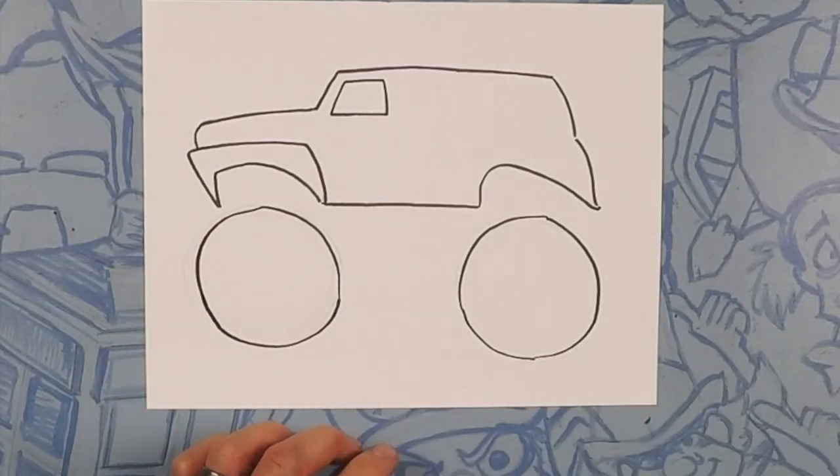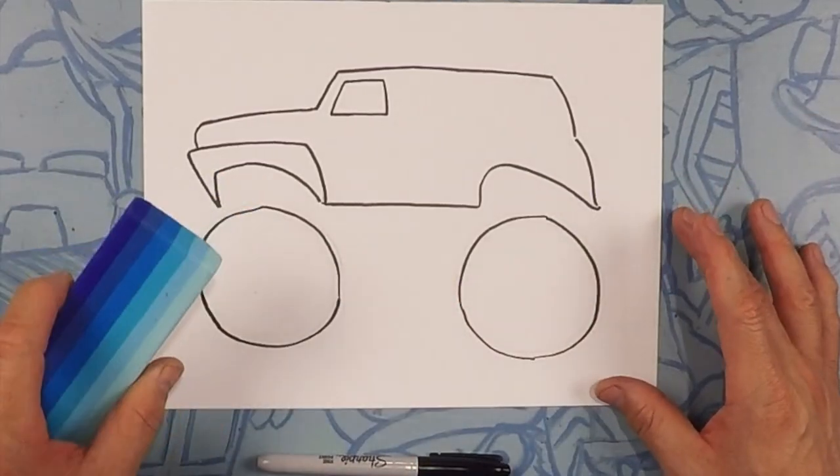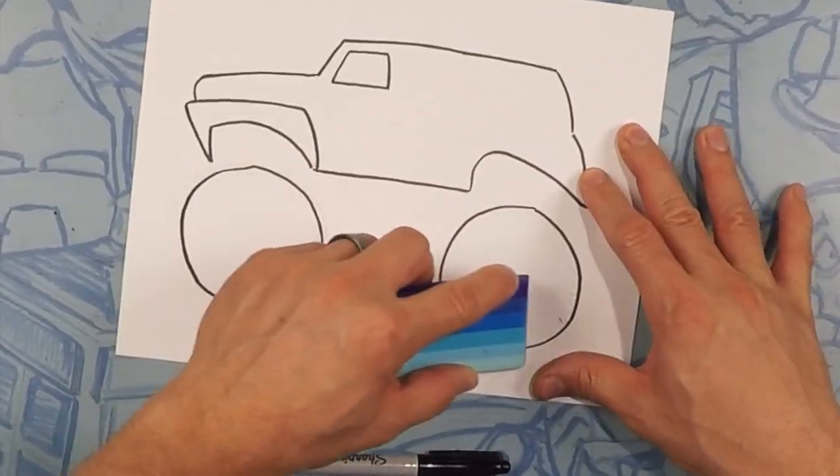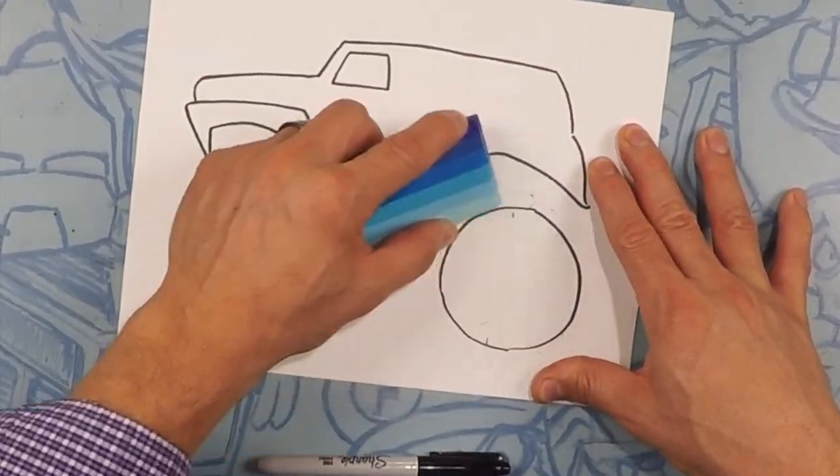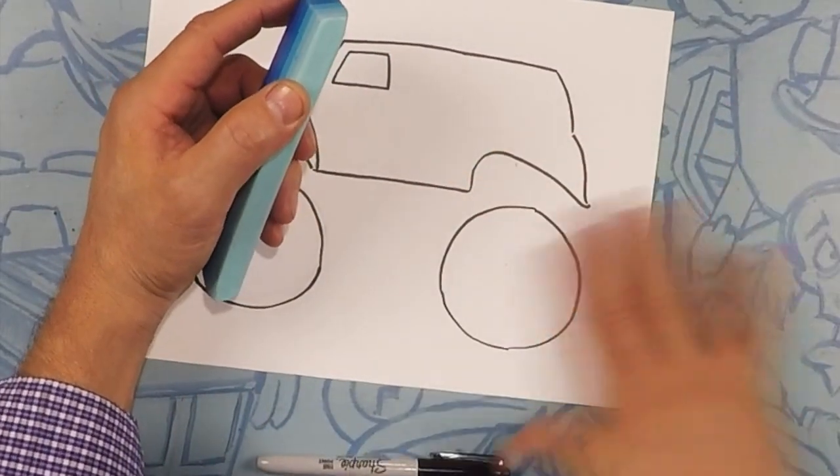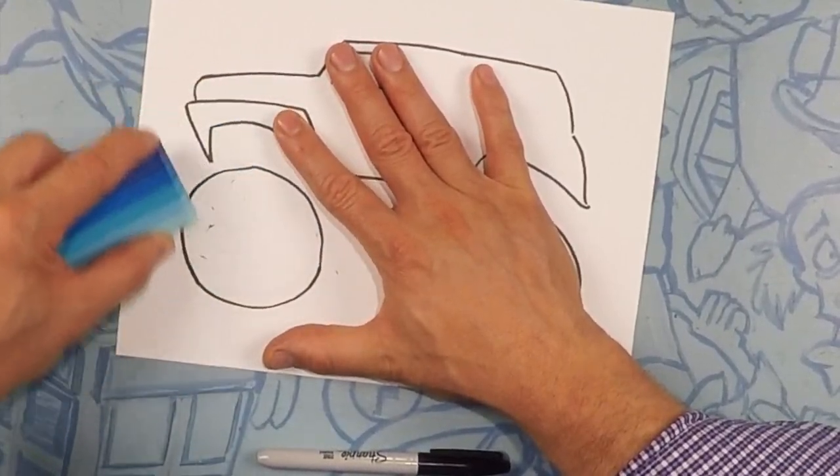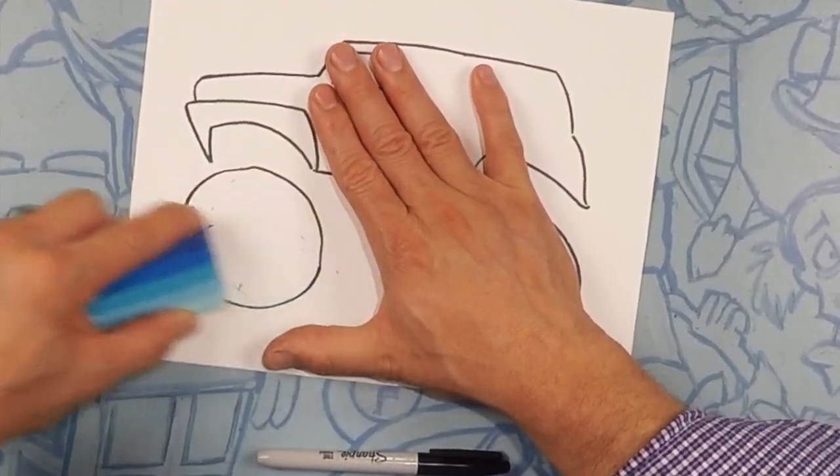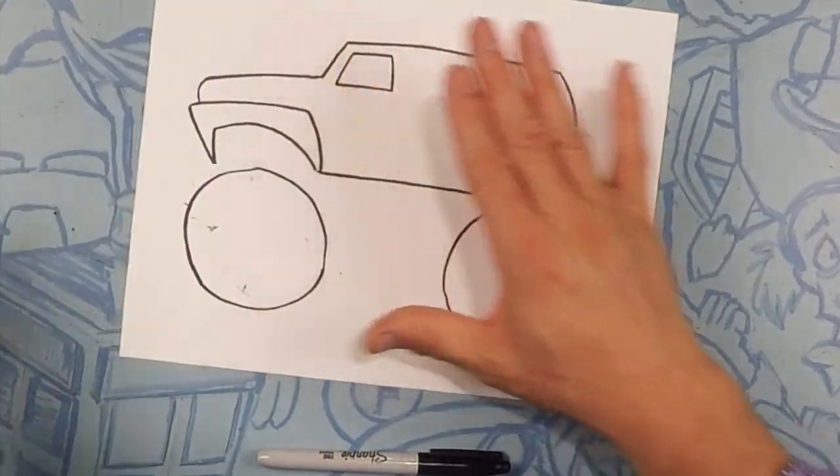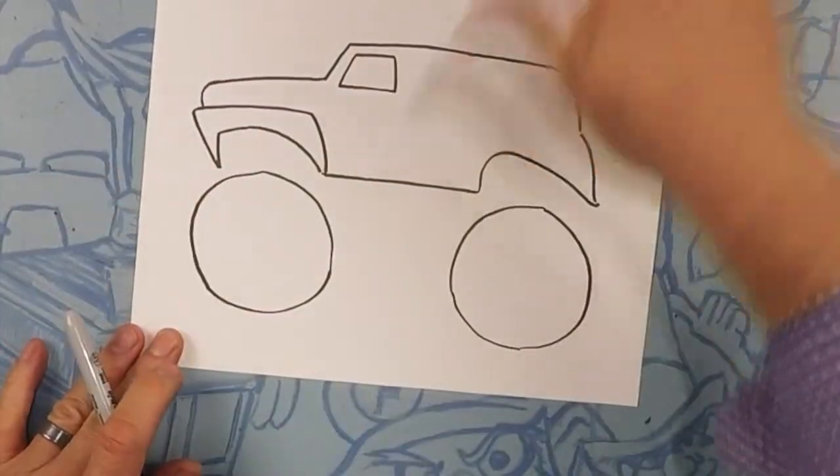So once we have our Sharpie laid down grab your trusty gigantic marker or eraser and erase the pencil line so we don't see it. Perfect.